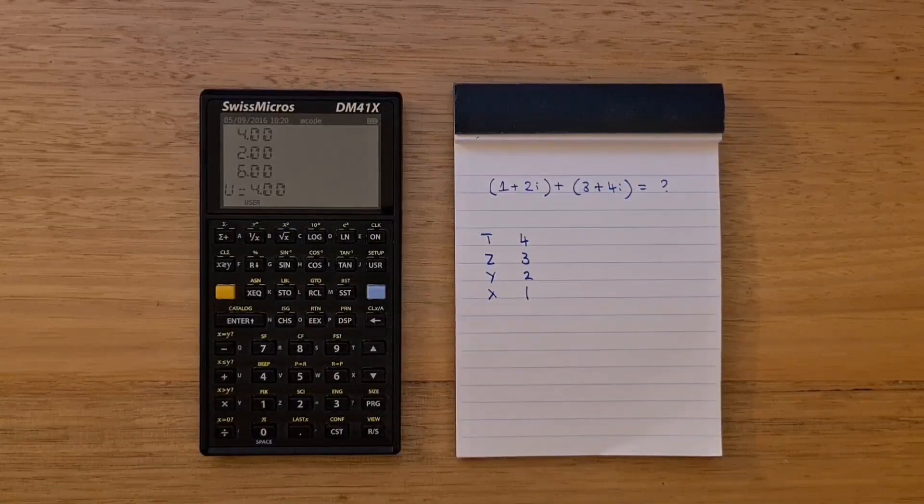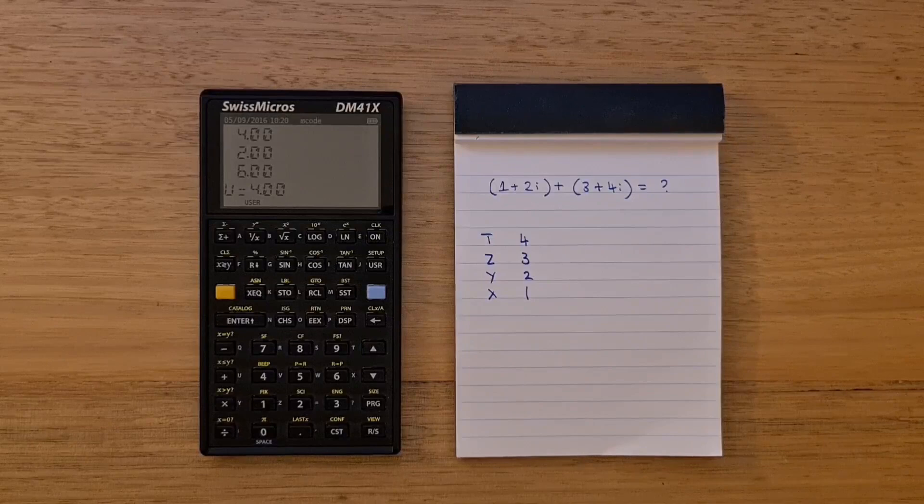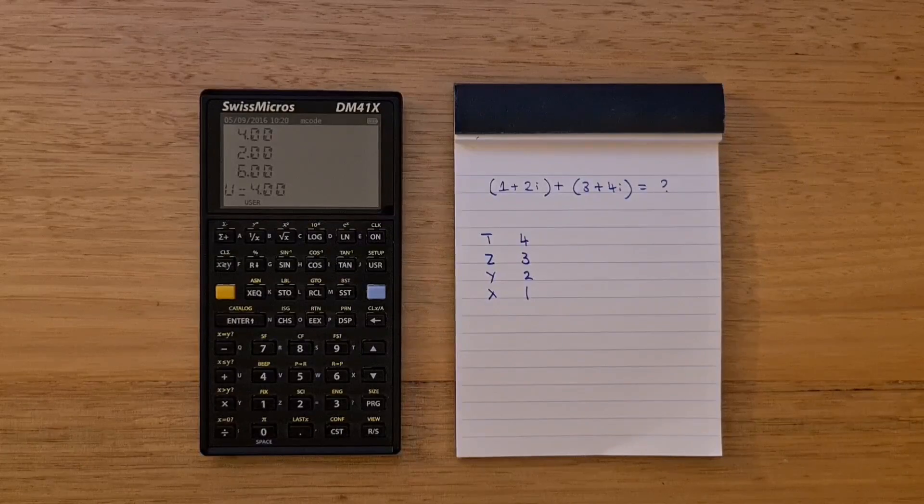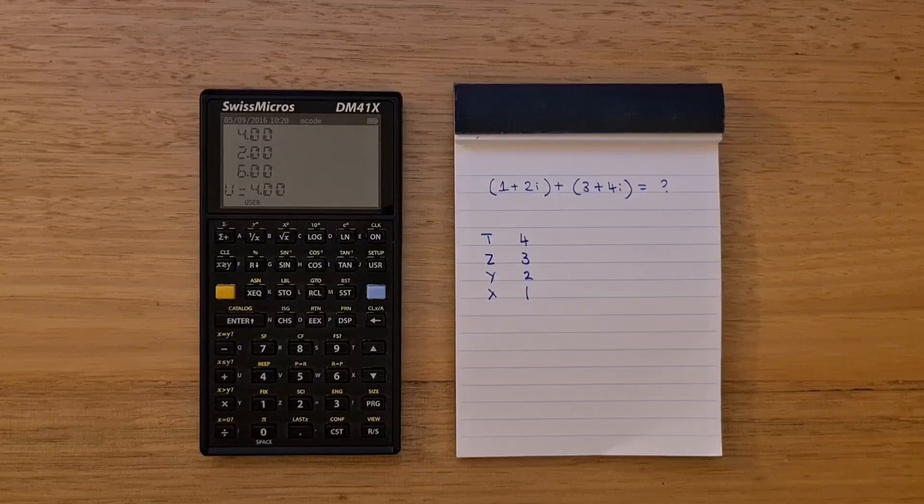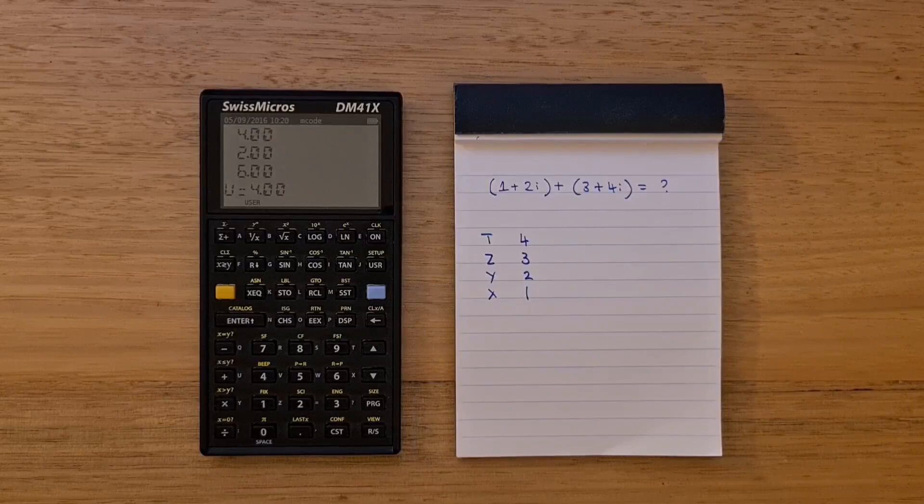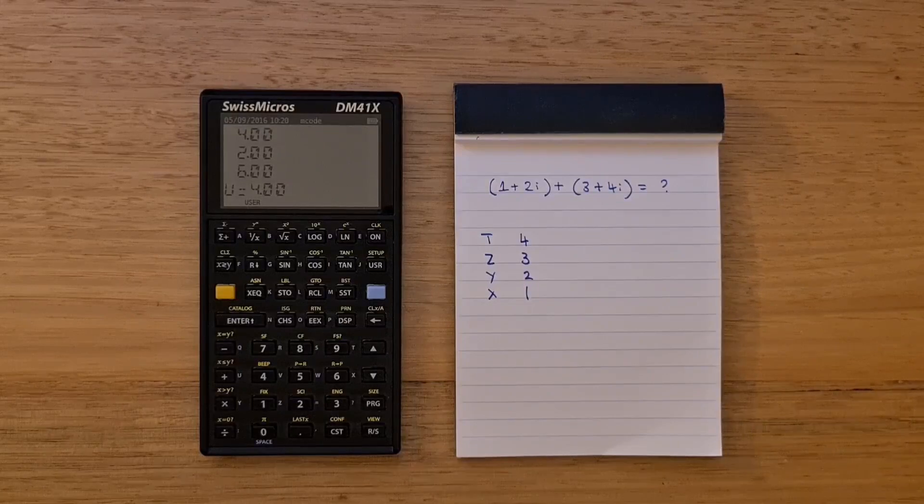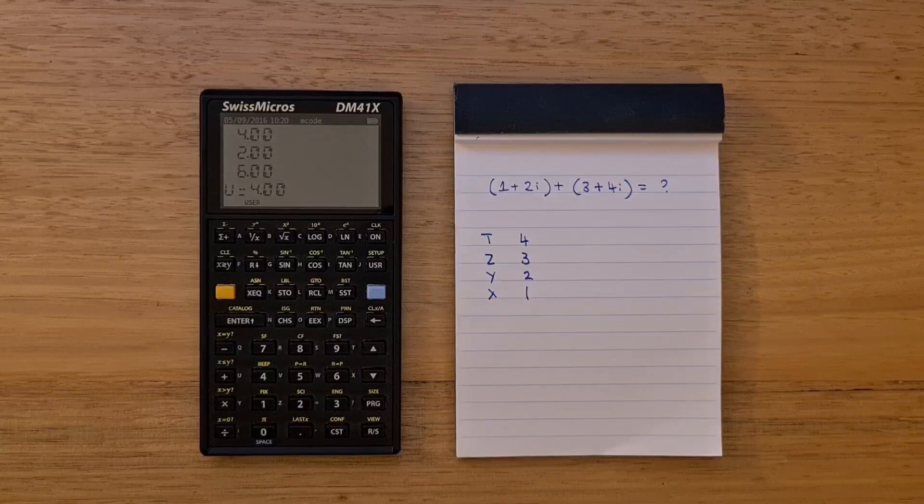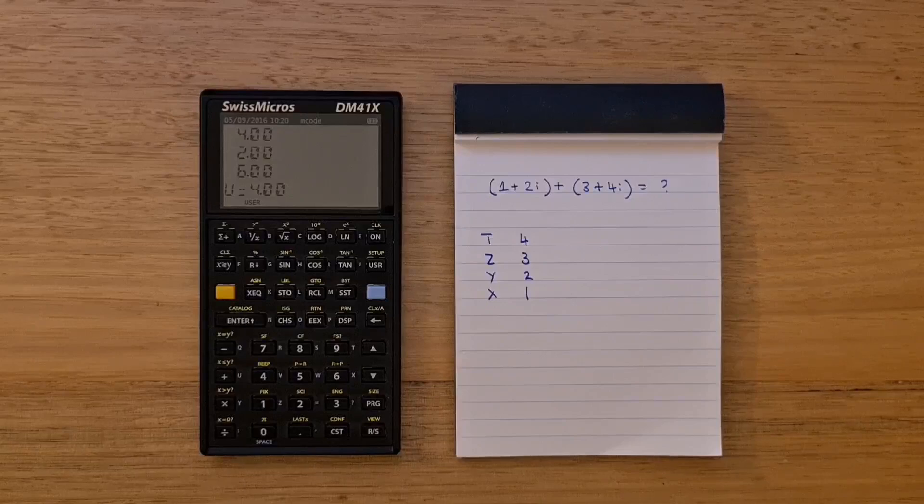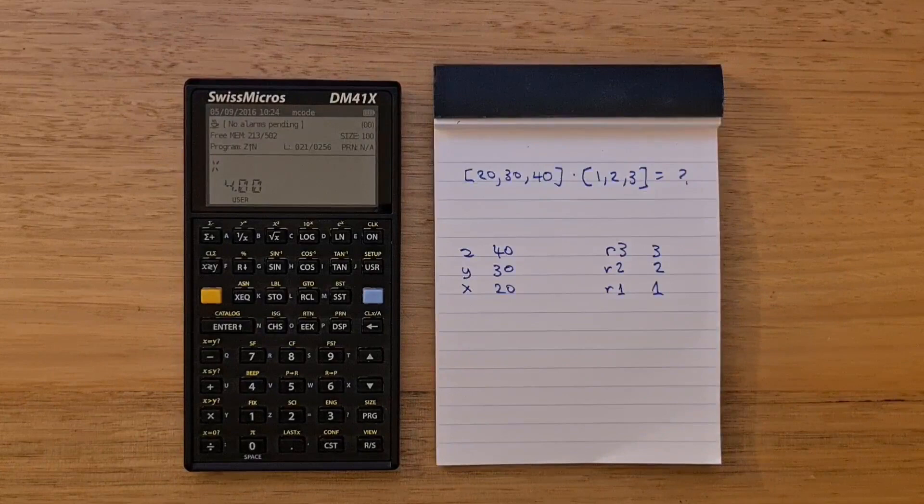The result is 4 plus 6i. There are functions for complex versions of all the arithmetic operations as well as sine, cos and tan and log. There's also magnitude operations and so on. You can use the user keyboard to assign these complex variants on top of the regular real operations. For example, you could assign complex add to the plus key and so on.